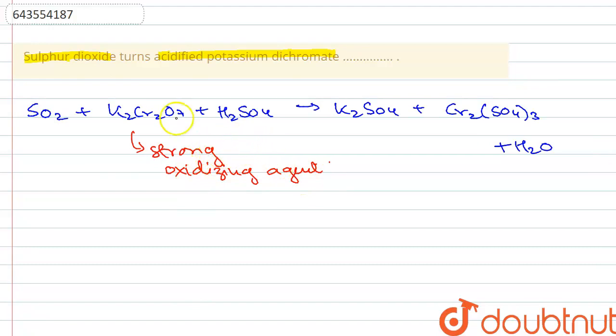So here the dichromate ion in potassium dichromate, which was orange in color, which is orange in color.